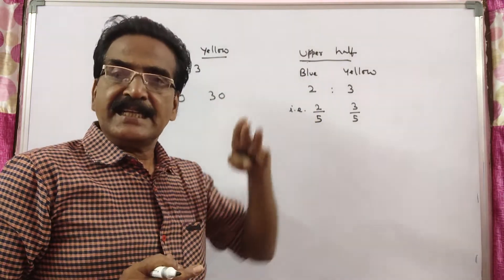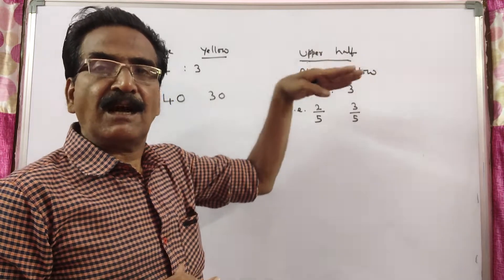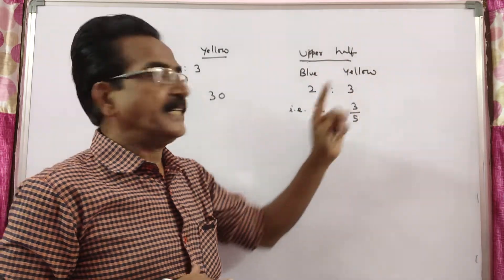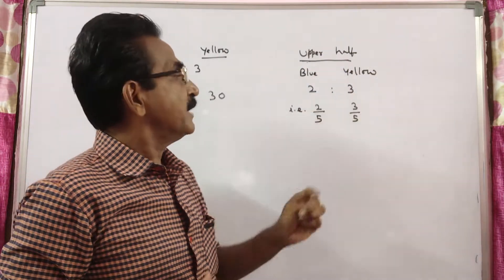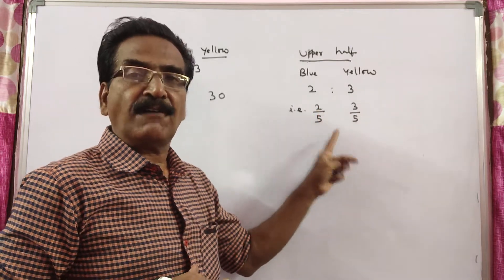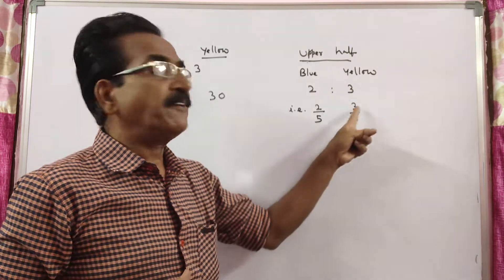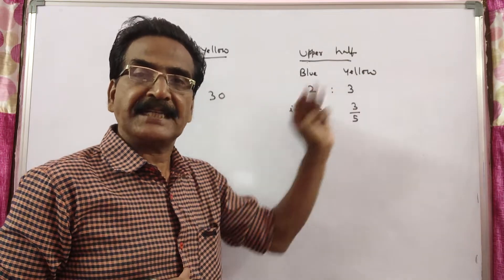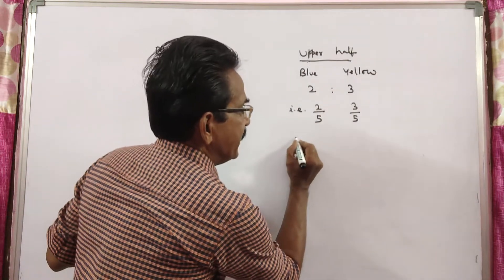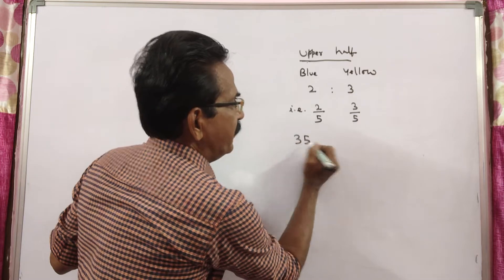And it is given that in the upper half, in the first half, blue and yellow are painted in the ratio 2 is to 3. That means 2/5 of the upper half is painted blue, 3/5 of the upper half is painted yellow. What is the area of the upper half? 35 units.